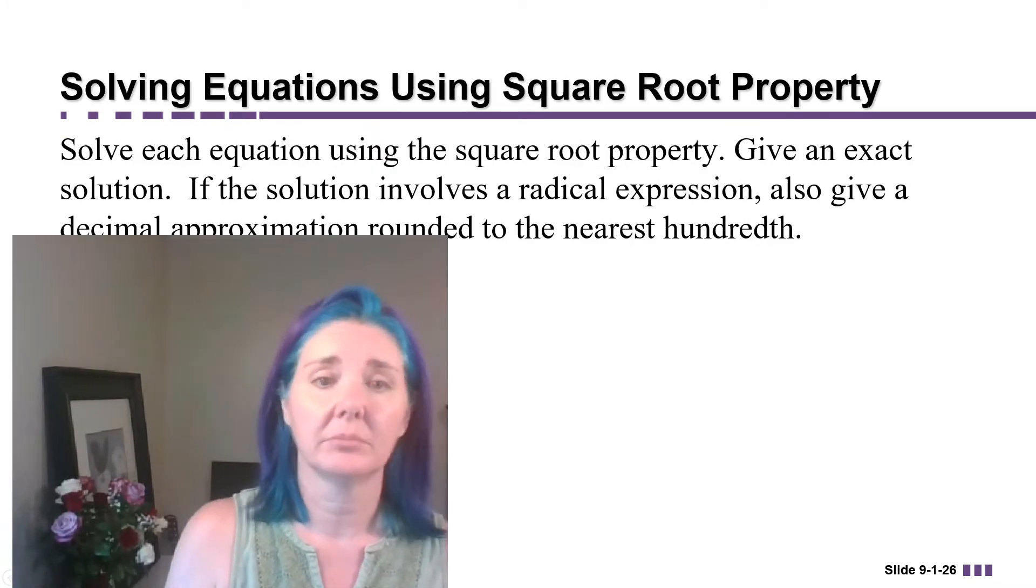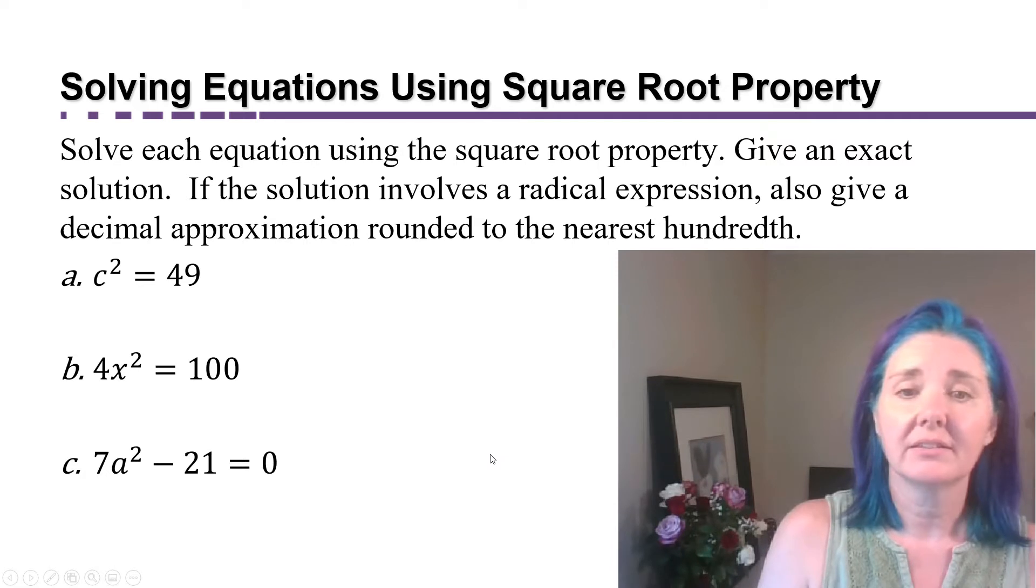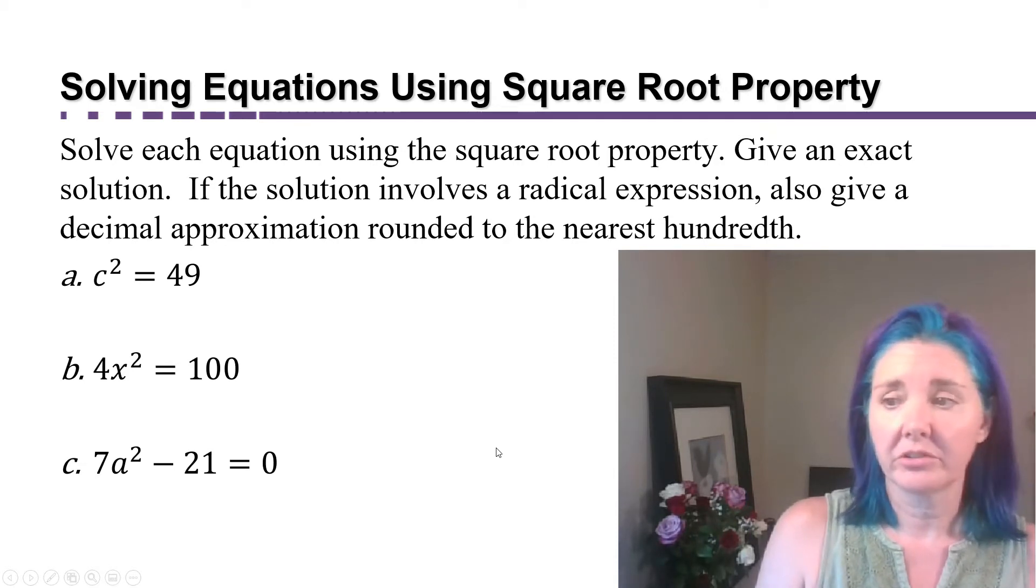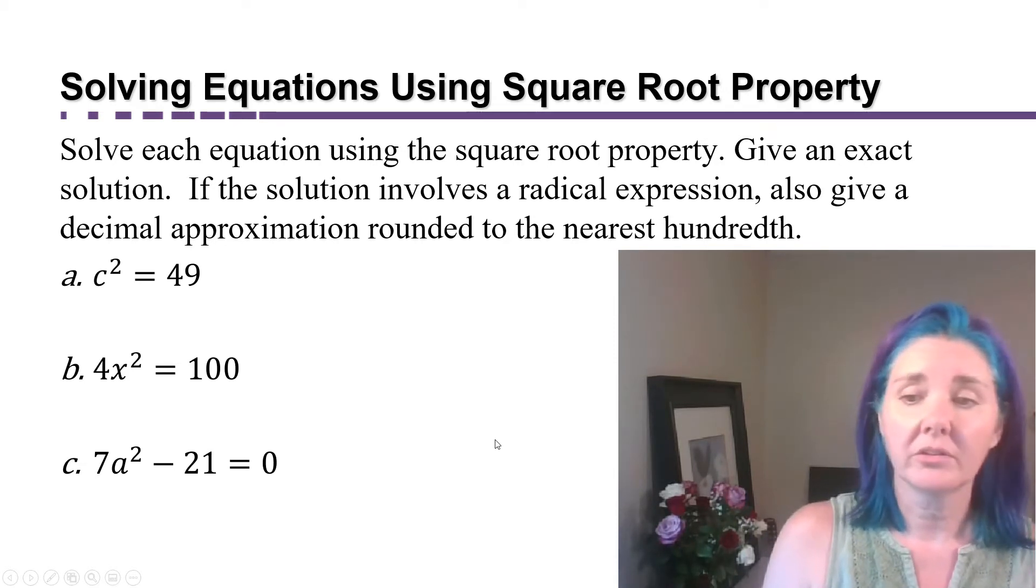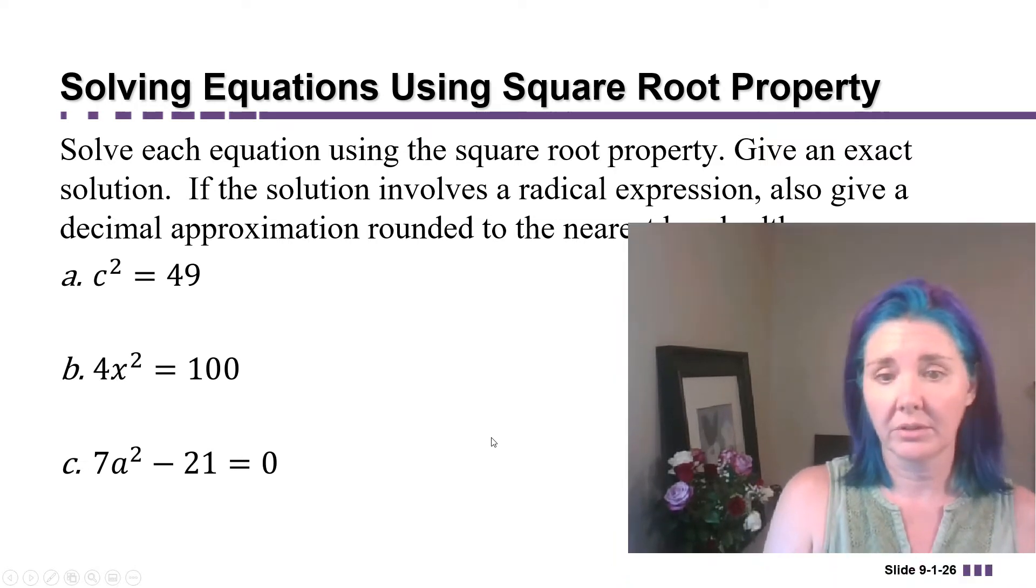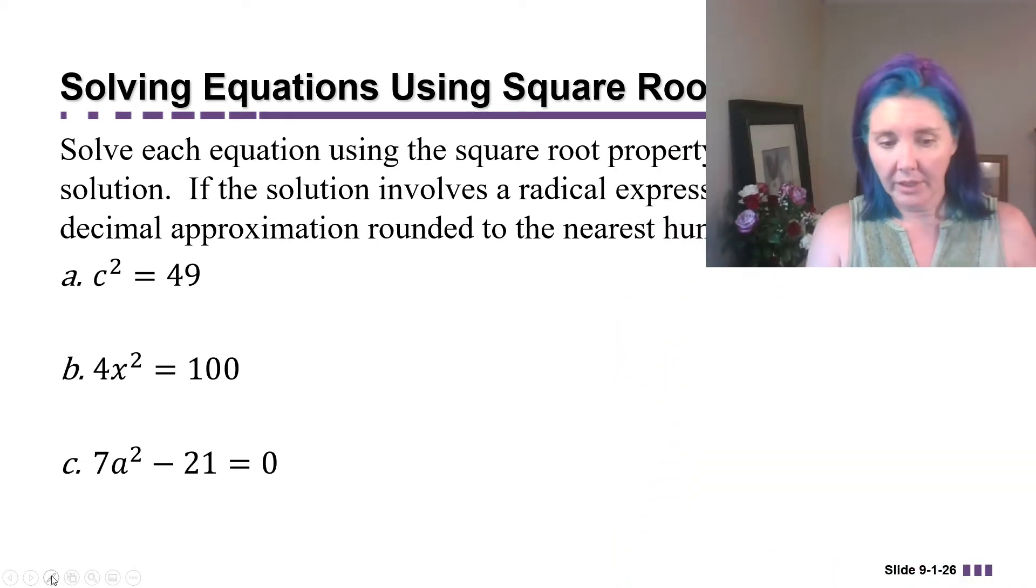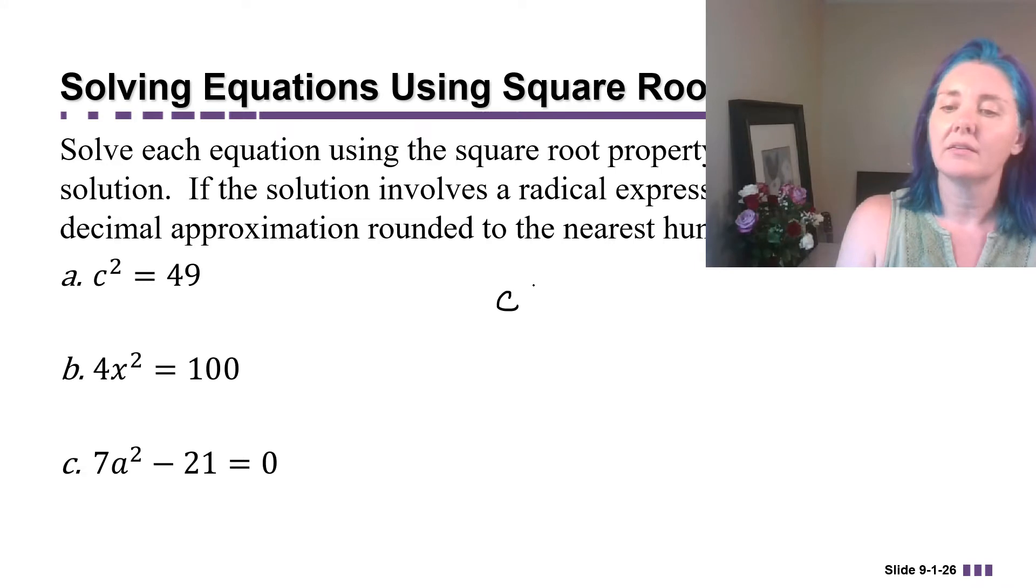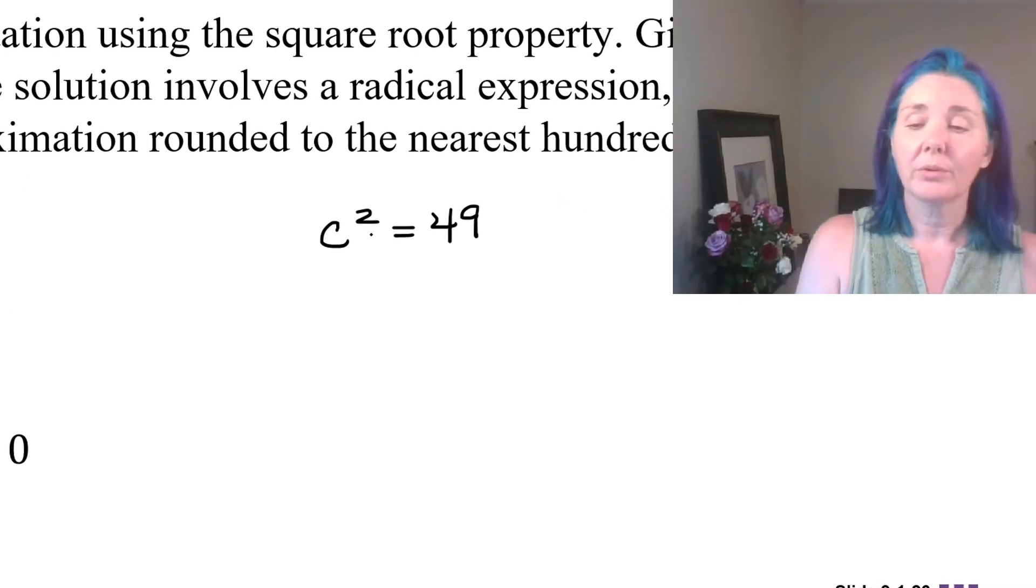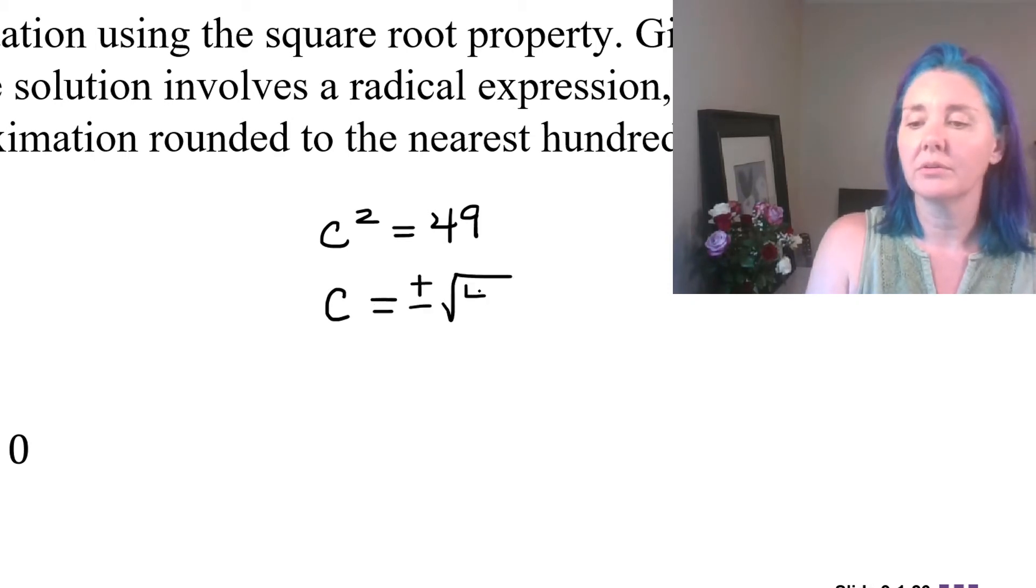Let's look at a couple of examples. The instructions say solve each equation using the square root property. Give an exact solution. If the solution involves a radical expression, also give a decimal approximation rounded to the nearest hundredth. So we're going to start with part a, which says that c squared is equal to 49. So the square root property tells us that c is equal to plus or minus the square root of 49.